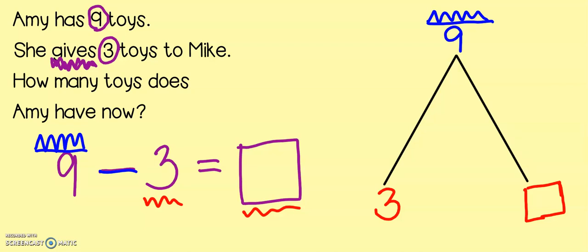Okay. So, I know my total is nine and I'm subtracting three. So, I'm going to use my touch points. Nine, eight, seven, six. So, Amy has six toys left. I put the word toys because that is our label. All mathematicians label their answer. Make sure you look back in the problem to see what the label is.